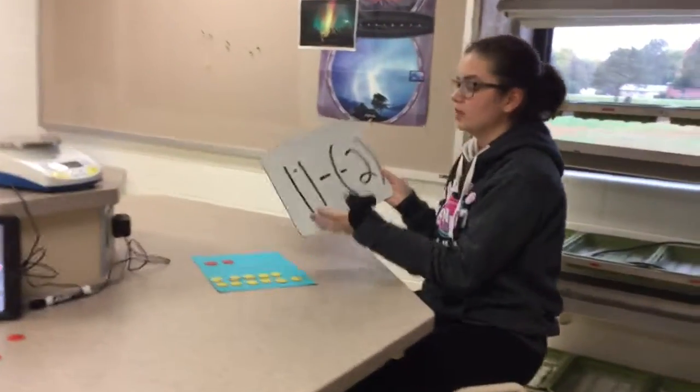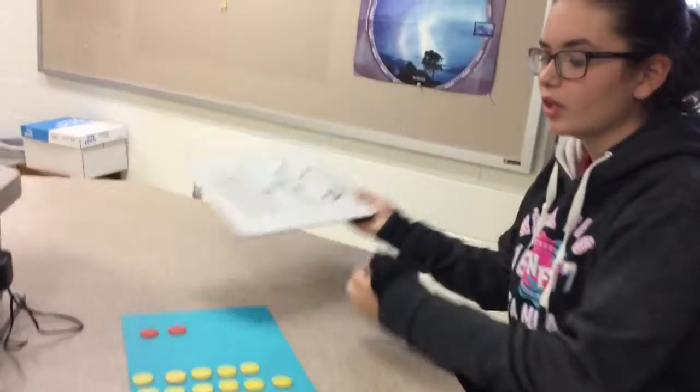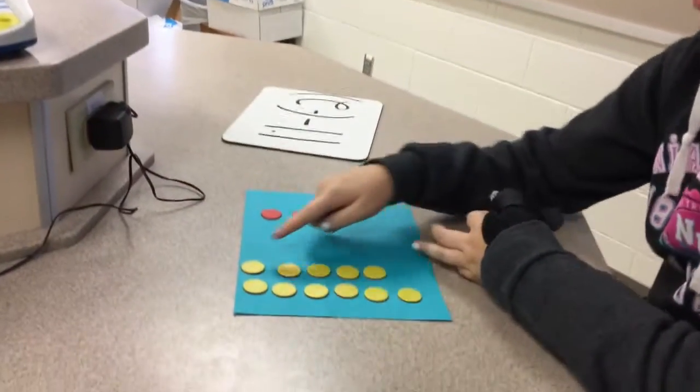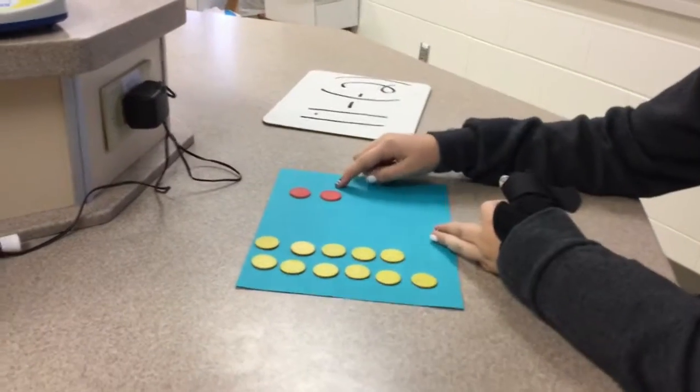Subtraction. Our problem is 11 minus negative 2. First, we have our 11 positive chips and our negative 2 chips.